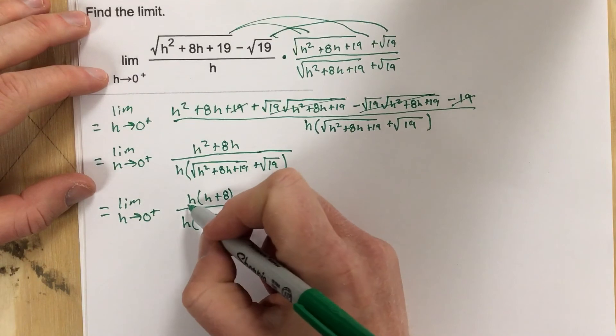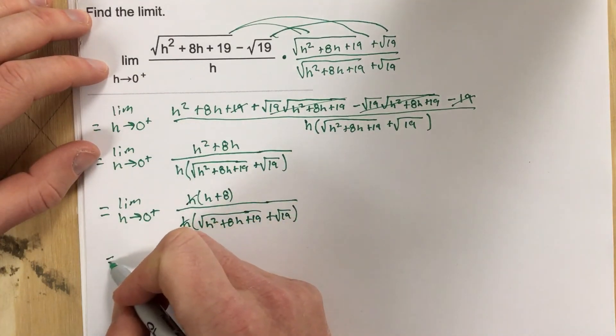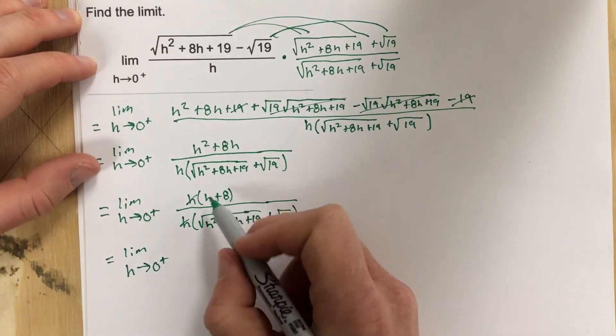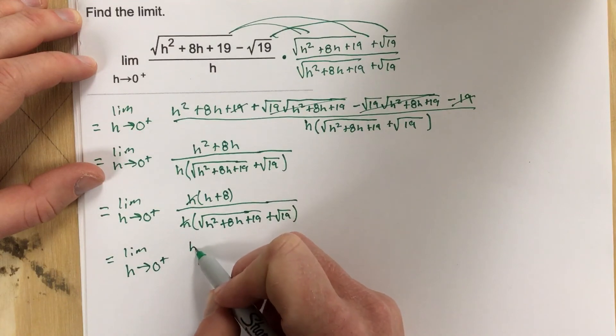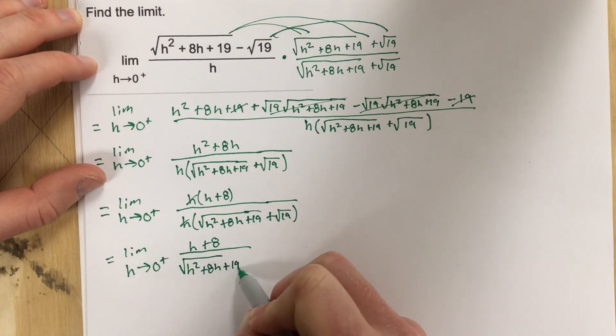And you're going to see that I end up with limit as h approaches zero from the right h plus 8 over root h squared plus 8h plus 19 plus root 19.